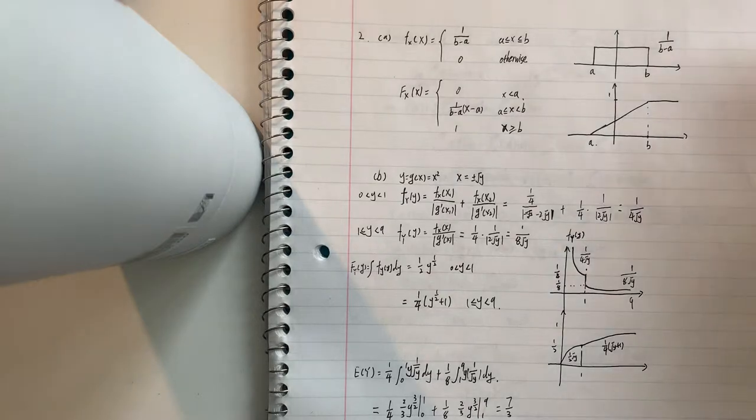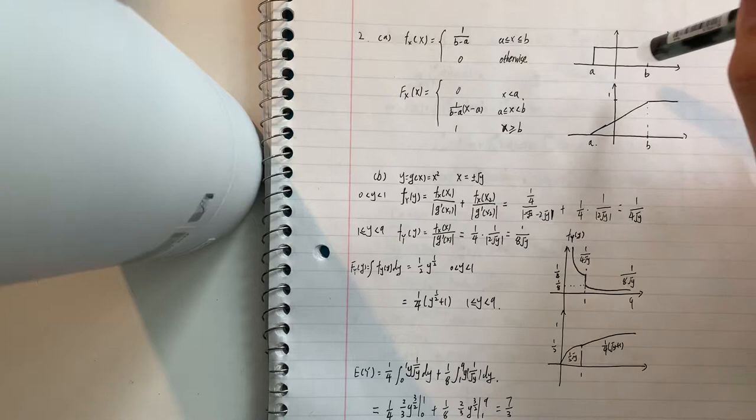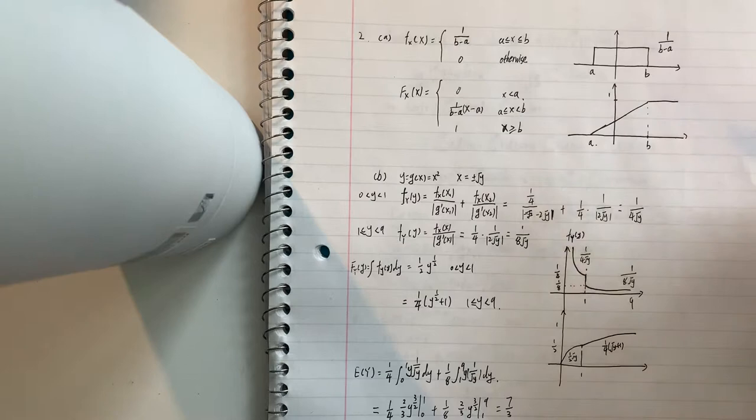For question 2, we know x is uniform in a and b, and the area of this rectangle is equal to 1.